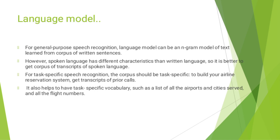For general purpose speech recognition, the language model can be an n-gram model of text learned from a corpus of written sentences. However, spoken language has different characteristics than written language, so it is better to use a corpus of transcripts of spoken language. For task-specific speech recognition, the corpus should be task specific. For example, to build an airline reservation system, get transcripts of prior calls, and also use a task-specific vocabulary such as a list of all airports, cities served, and flight numbers.